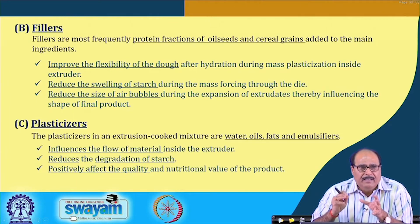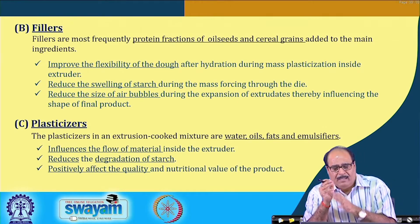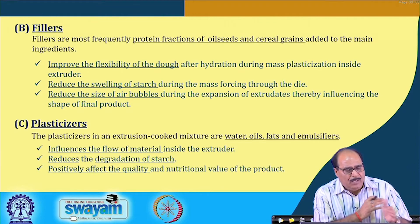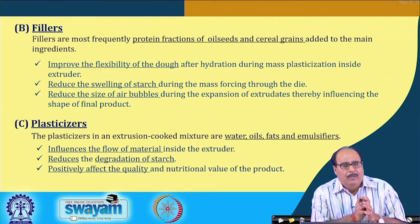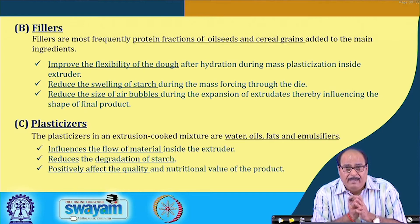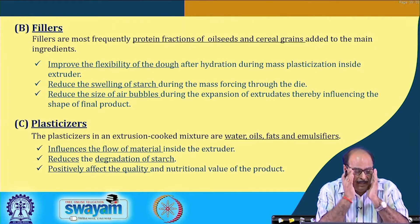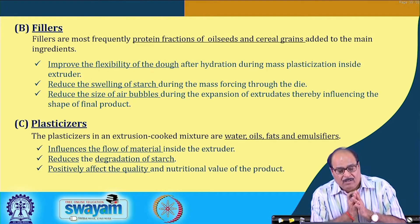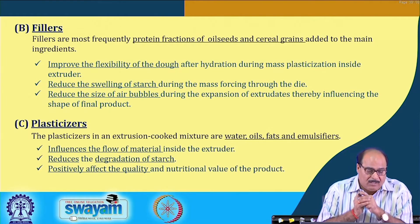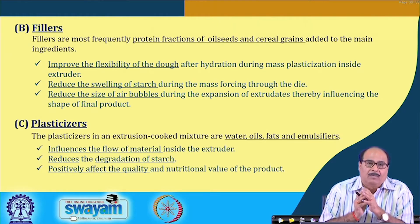The other type of material can be used as fillers — most frequently protein fractions of oil seeds and cereal grains are added to the main ingredient. These fillers improve the flexibility of the dough after hydration during mass plasticization inside the extruder. They reduce the swelling of starch during mass forcing through the die and also reduce the size of air bubbles during expansion of the extrudate, thereby influencing the shape of the final products.